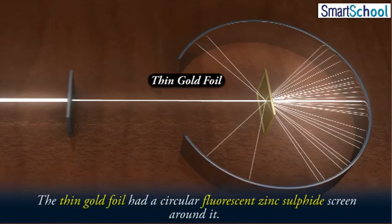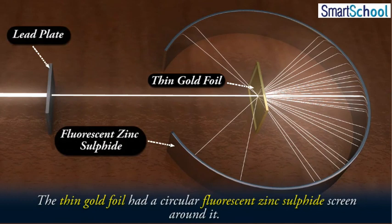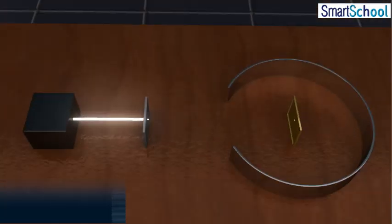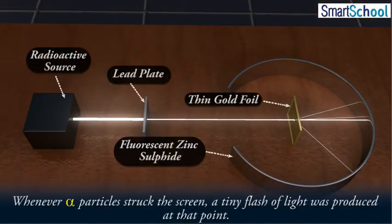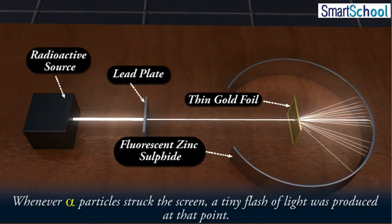The thin gold foil had a circular fluorescent zinc sulfide screen around it. Whenever alpha particles struck the screen a tiny flash of light was produced at that point.